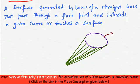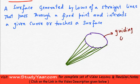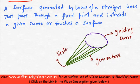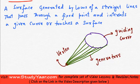This curve is known as the guiding curve. These lines are known as generators, sometimes also referred to as generatrix. And this fixed point is known as the vertex, sometimes also referred to as the apex. So this is a cone — a set of lines which pass through a fixed point and intersect a given curve.